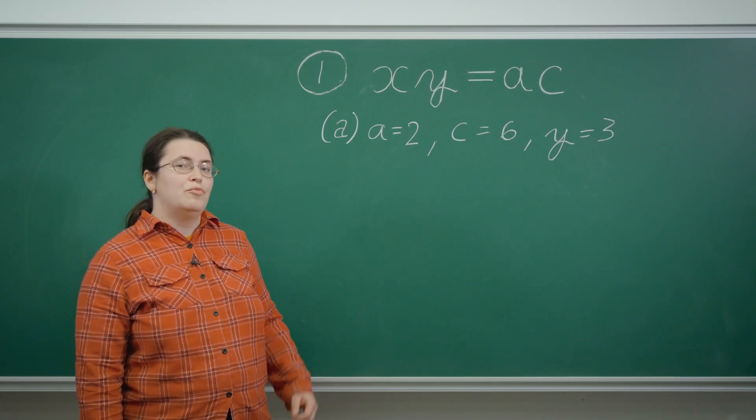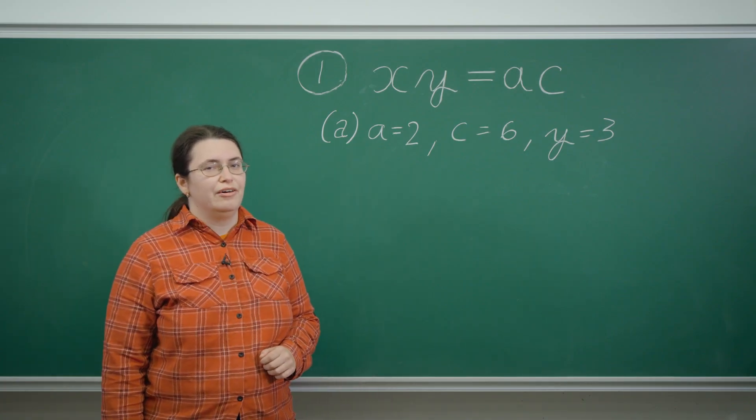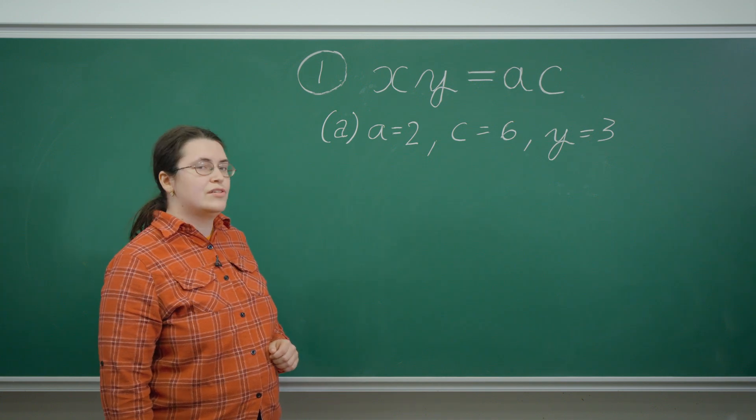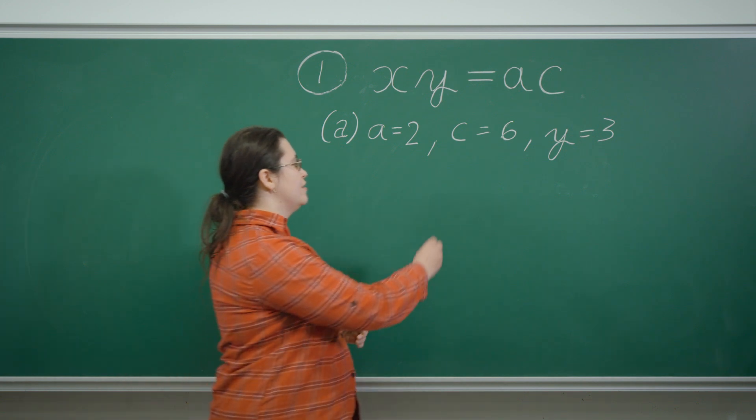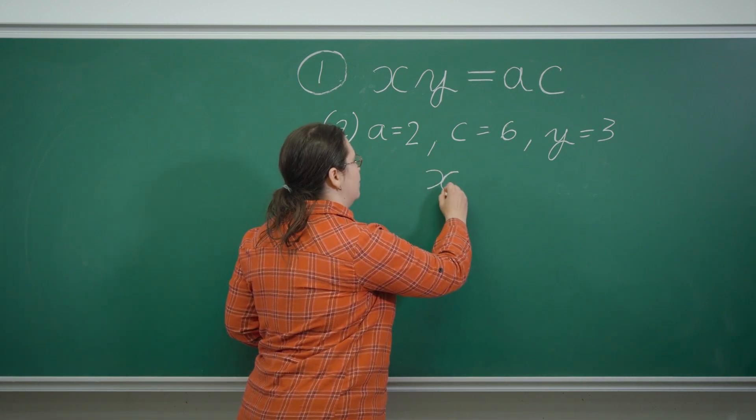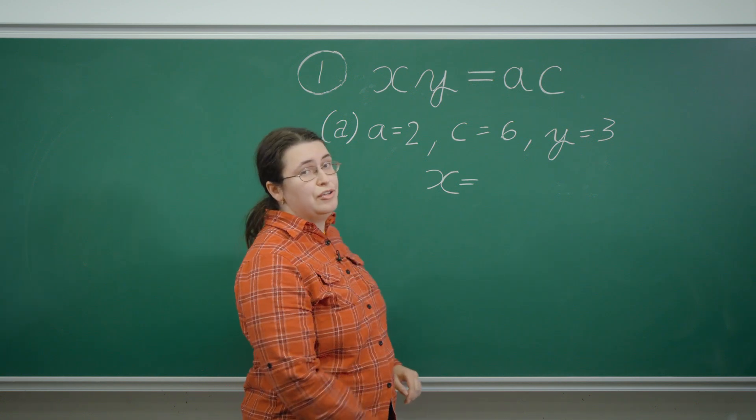In part A we're told all the numbers except X and have to work out the value of the unknown X. Using our previously derived equation we can rearrange it for X simply by dividing both sides of the equation by Y.